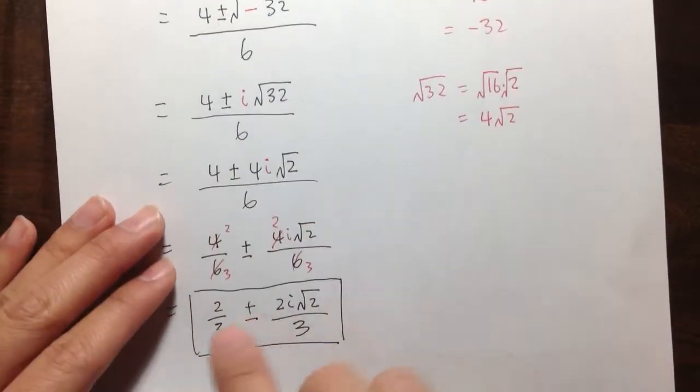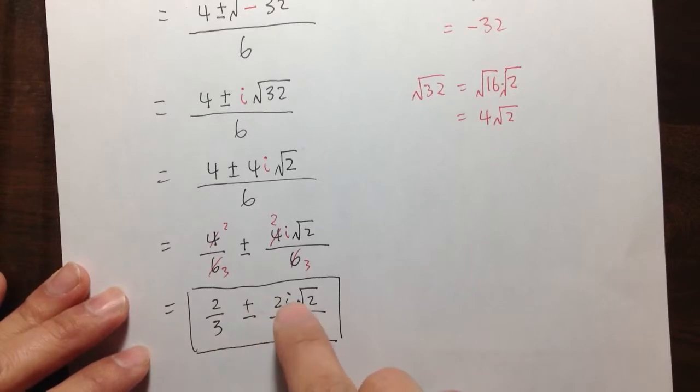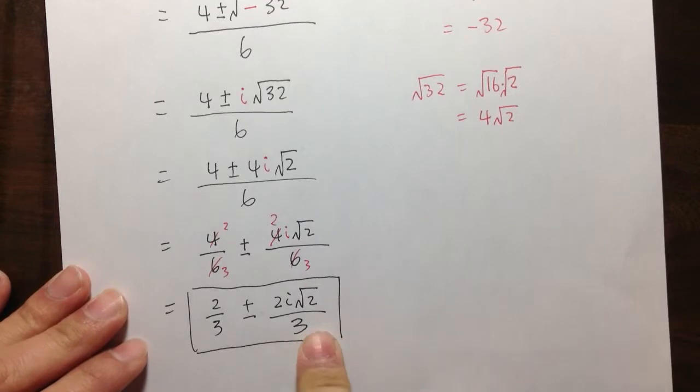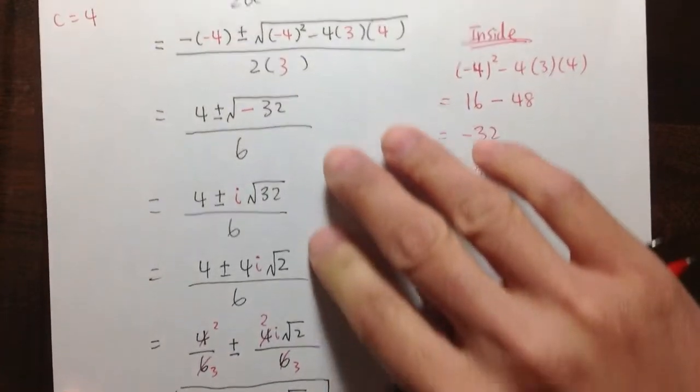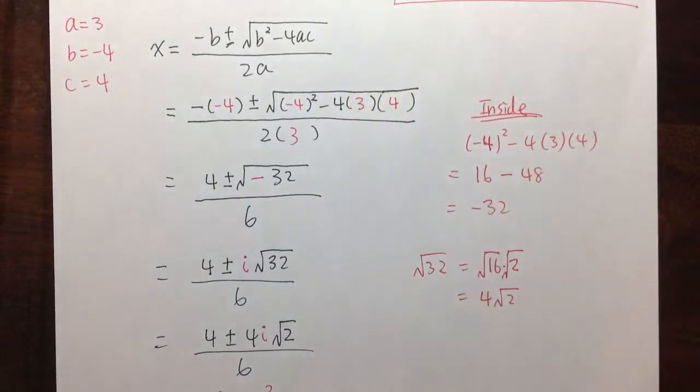And our answer was 2/3 plus or minus 2i√2 over 3. Well, how do we know if this is actually the correct answer? How do we make sure that we didn't make any mistakes throughout the calculation? And this is how we can do it.